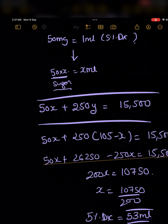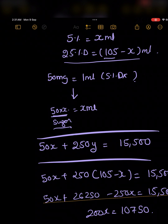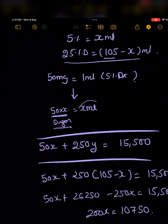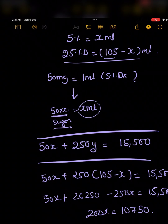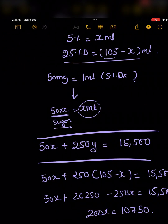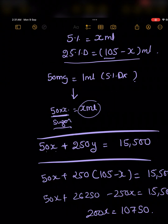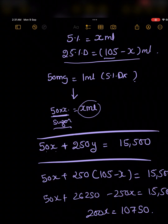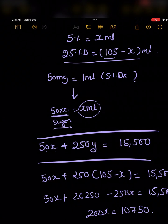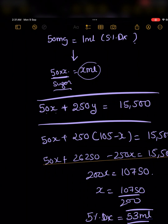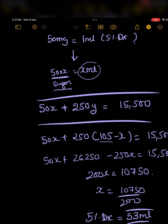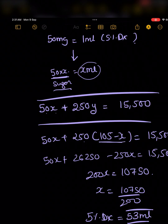Since people find this part initially confusing, let me repeat: how does 50x come here? Because 1 ml of 5% dextrose contains 50 mg of sugar, and I want to give x ml — so that's 50 × x amount of sugar. Similarly for y, it's 250 × y. The total of both equals 15,500 mg of sugar, and that's how we calculate the GIR.